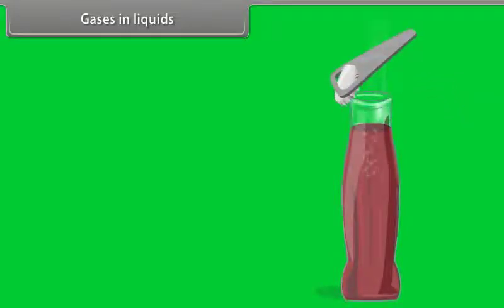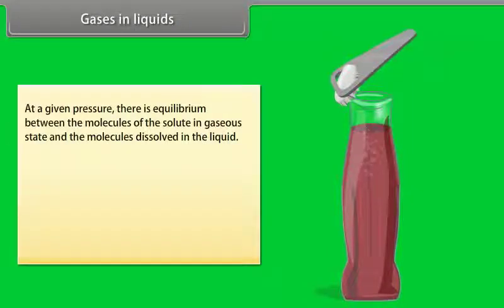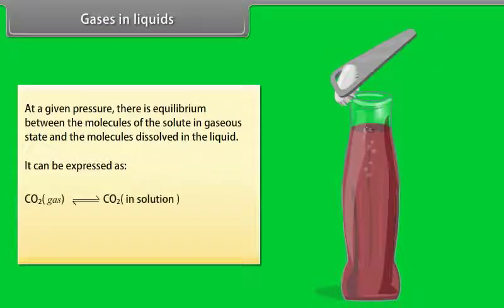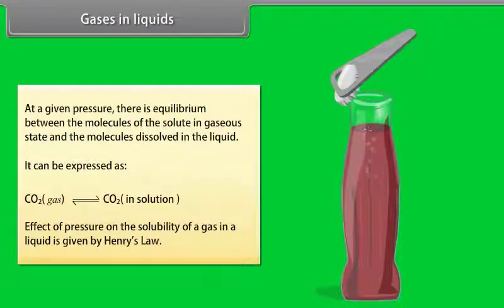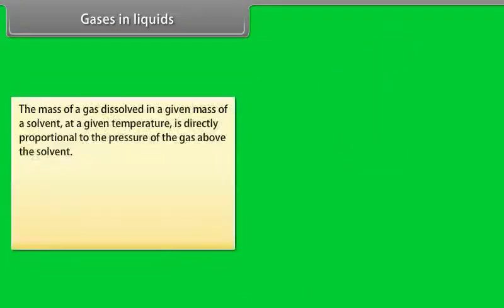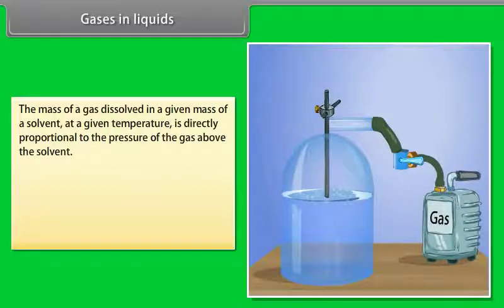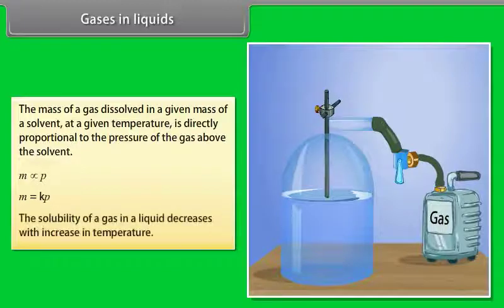Gases in Liquids. When a cold drink is opened, the carbon dioxide dissolved in it fizzes out rapidly. This represents an equilibrium situation. At a given pressure, there is equilibrium between the molecules of the solute in gaseous state and the molecules dissolved in the liquid. The effect of pressure on the solubility of a gas in a liquid is given by Henry's Law, which states that the mass of a gas dissolved in a given mass of a solvent at a given temperature is directly proportional to the pressure of the gas above the solvent: M = KP. The solubility of gas in a liquid decreases with increase in temperature.